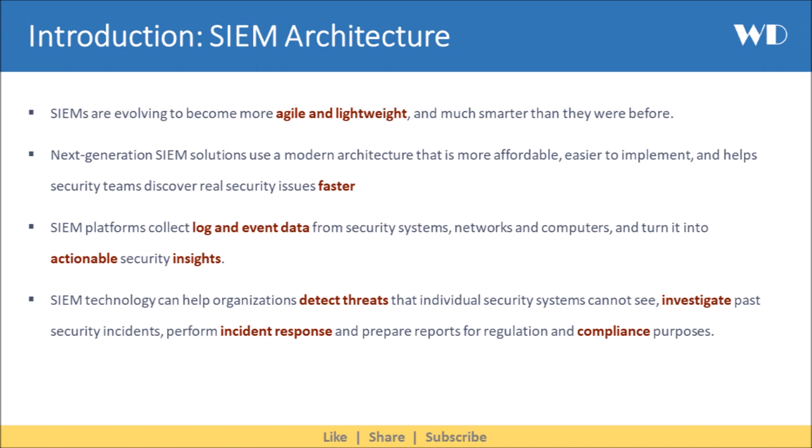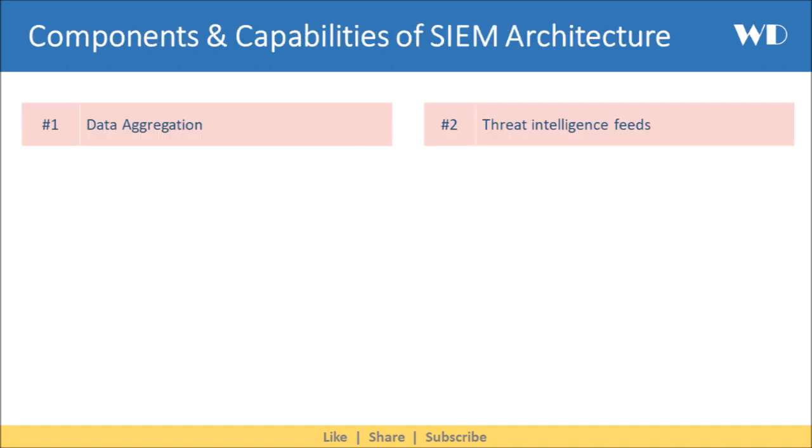SIEM technology can help organizations detect threats that individual security systems cannot see, investigate past security incidents, perform incident response, and prepare reports for regulation and compliance purposes. Let's understand the components and capabilities in a SIEM architecture.